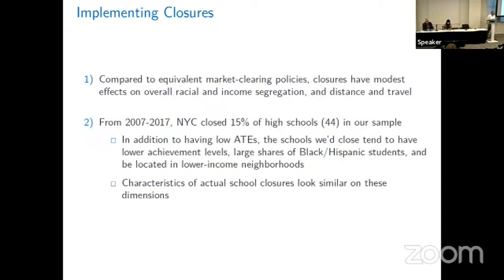I said this is more feasible, and I'll make that argument based on history in New York City. First, there's less disruption in my simulation. Second, from 2007 to 2017, New York City actually closed 15% of high schools — within the right ballpark of the numbers in my table. The schools they closed tend to have low average treatment effects, large shares of Black and Hispanic students, and be located in lower-income neighborhoods — overlapping considerably with the schools we would optimally close given our calculations.